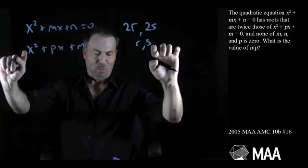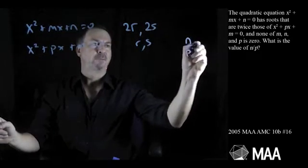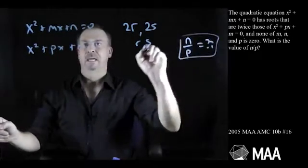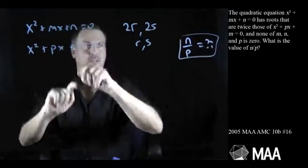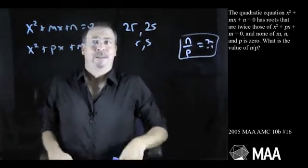From this information, I need to work out the value of n divided by p. Somehow I should have enough information to work out that ratio. What am I going to do here?